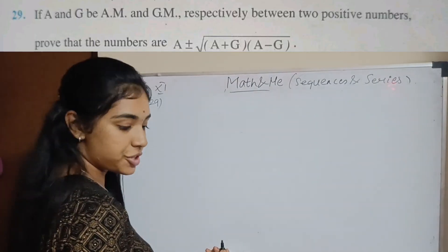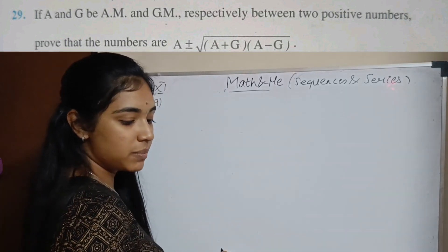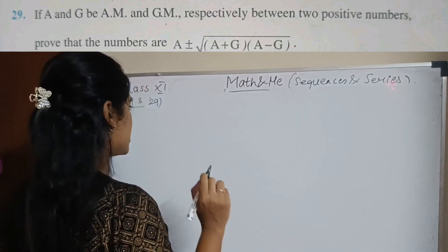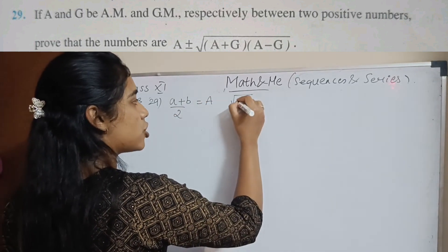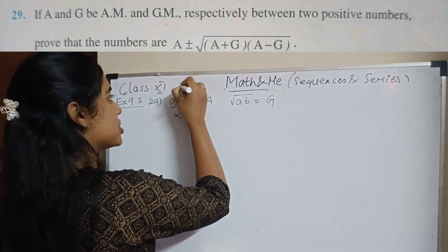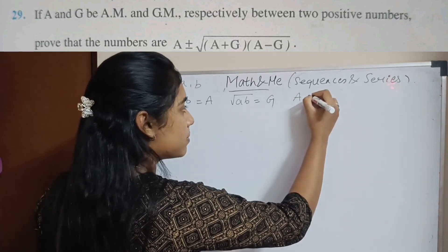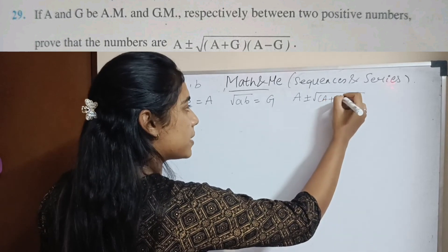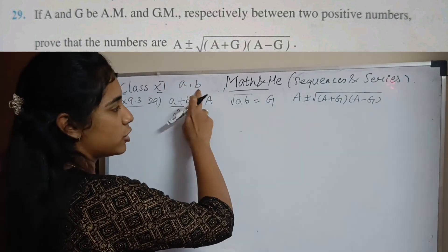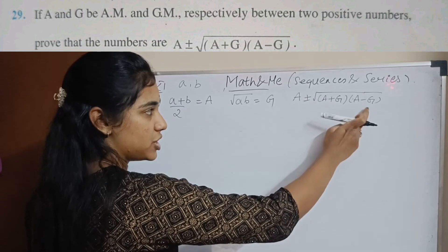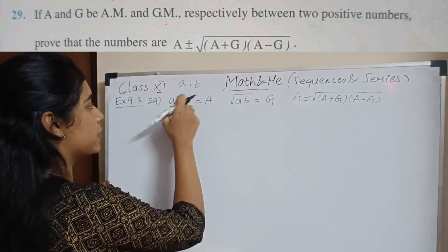Question number 29 is very similar to question 28 but with variables. The arithmetic mean and geometric mean respectively between two positive numbers are capital A and capital G. You have the arithmetic mean as A and the geometric mean as G. The two numbers are a and b, and you have to prove that the two numbers are A plus or minus root of (A+G)(A-G).